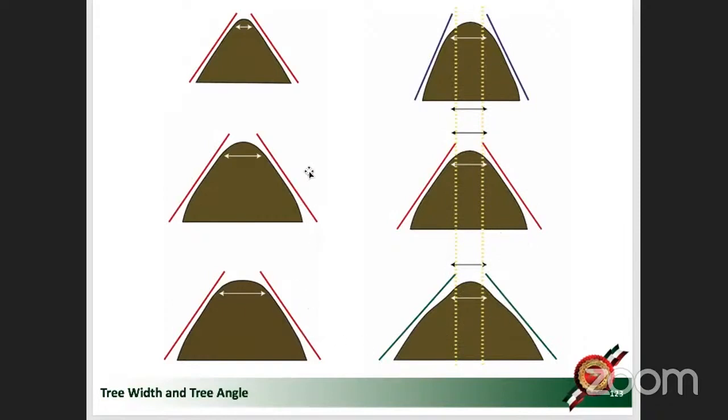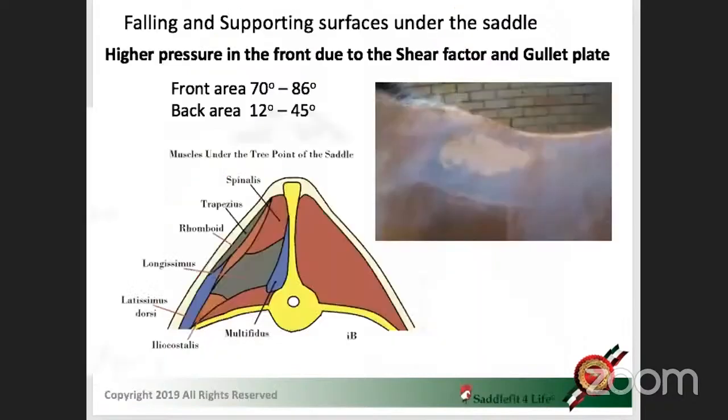Here, red, red, red, the same angle, but look at this, narrow tree width, medium tree width, wide tree width. Go with a wide tree width, medium angle, then you will avoid the dry spots, you will avoid the pinching and the biting on those sensitive area on the horse, which I showed earlier with the nerve.